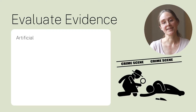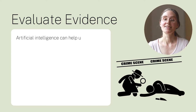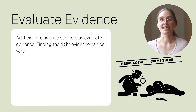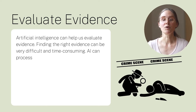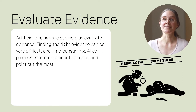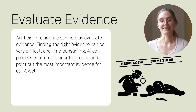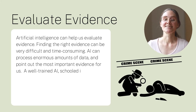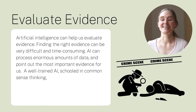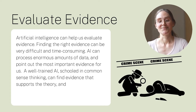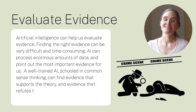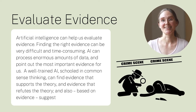Artificial intelligence can help us evaluate evidence. Finding the right evidence can be very difficult and time consuming. AI can process enormous amounts of data and point out the most important evidence for us. A well-trained artificial intelligence, schooled in common sense thinking, can find evidence that supports the theory, and also based on evidence suggest revisions of the theory.